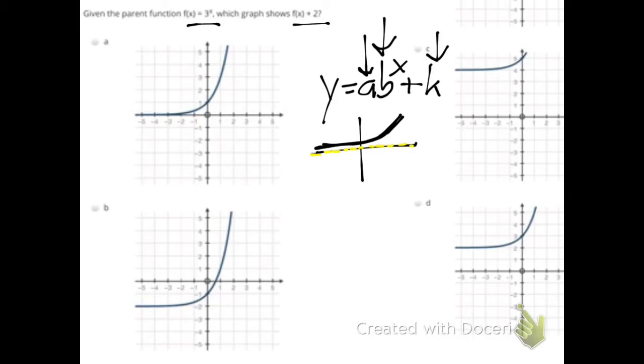When you have f of x equals three to the x power, you could tell that one is your a value and your k value is going to be plus zero or it's going to be zero. So that shows that your asymptote is going to be at zero.